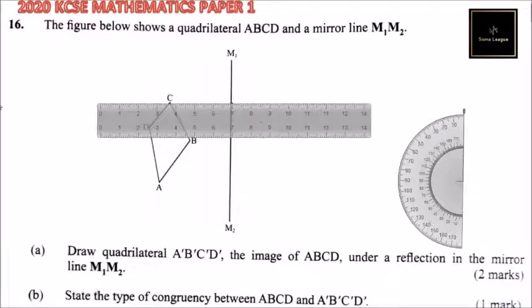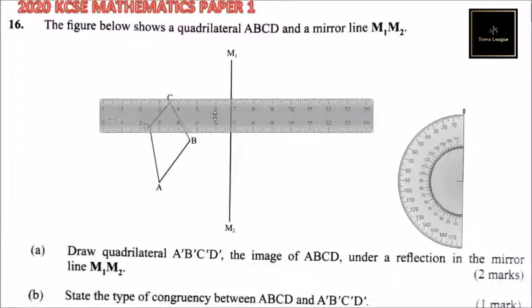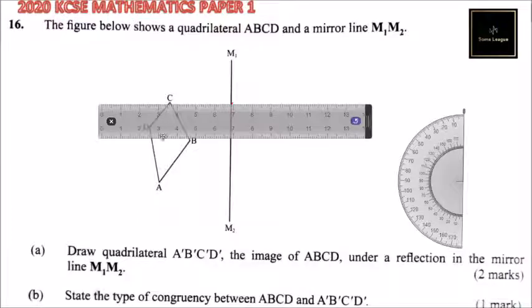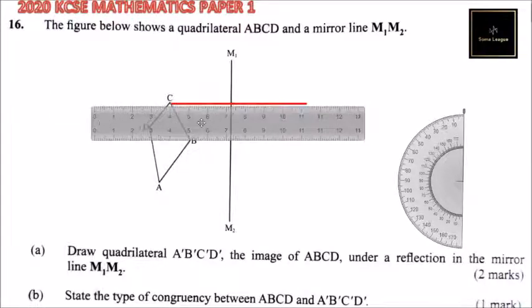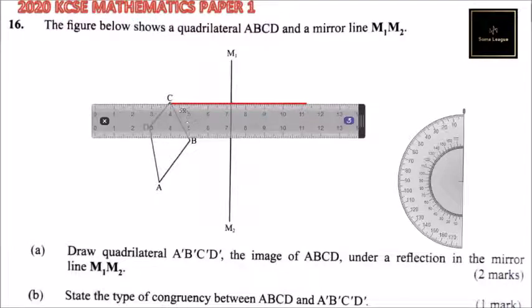That is, I draw a line from C through that point where I have identified as 90 degrees. And then I can be able to measure the distance from the object, that is from C.